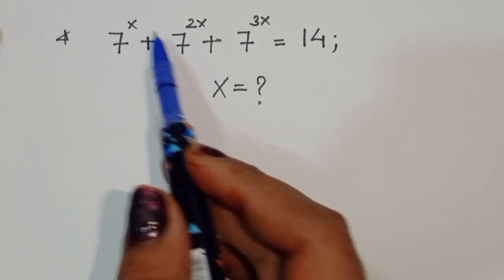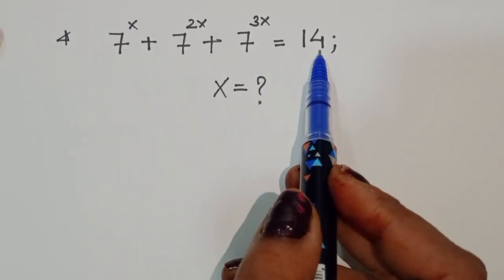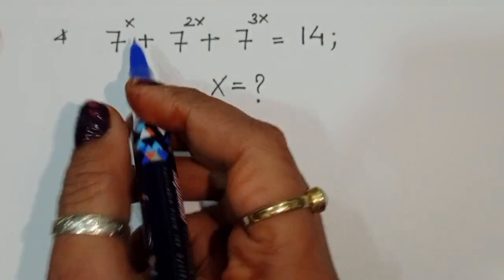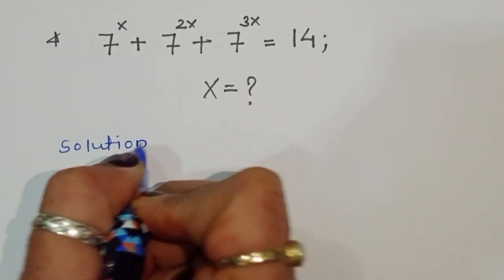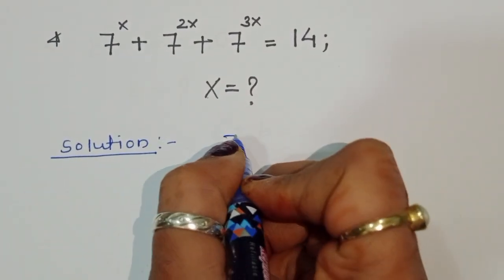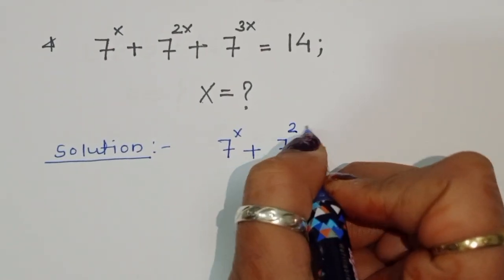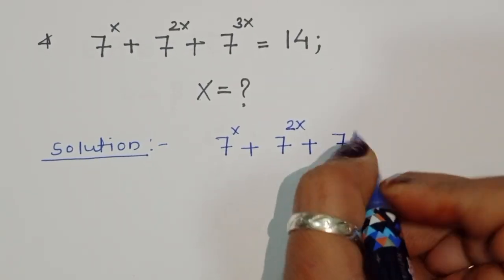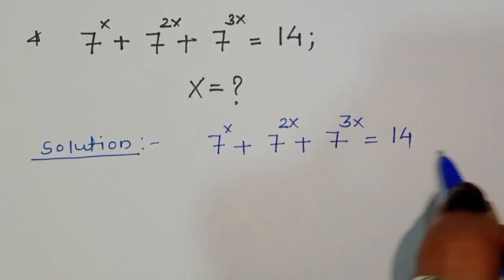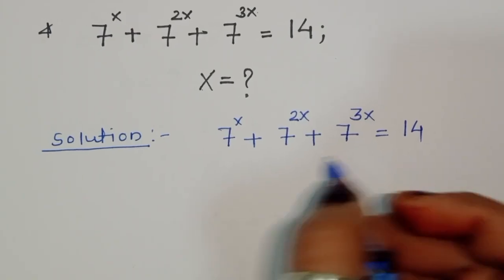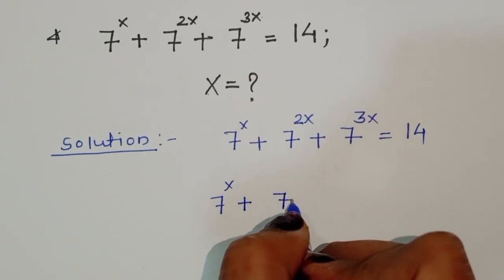The question is: given 7^x + 7^2x + 7^3x = 14, we have to find out the value of x. Let's see the solution. We are given 7^x + 7^2x + 7^3x is equal to 14.